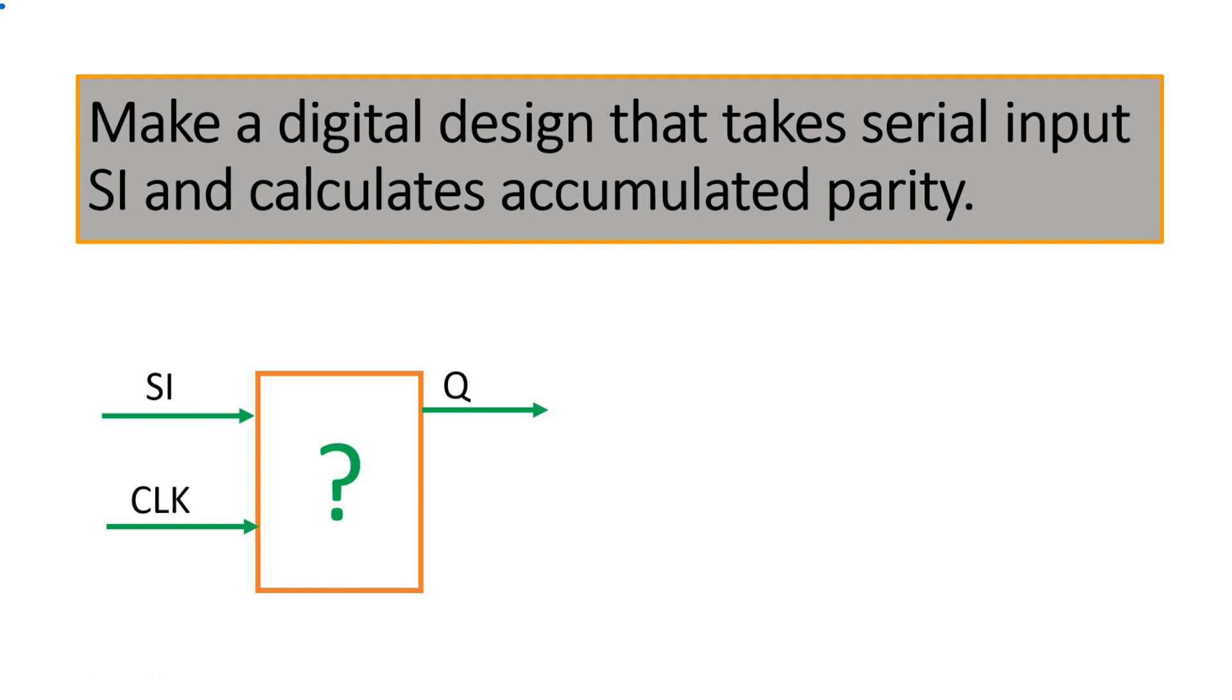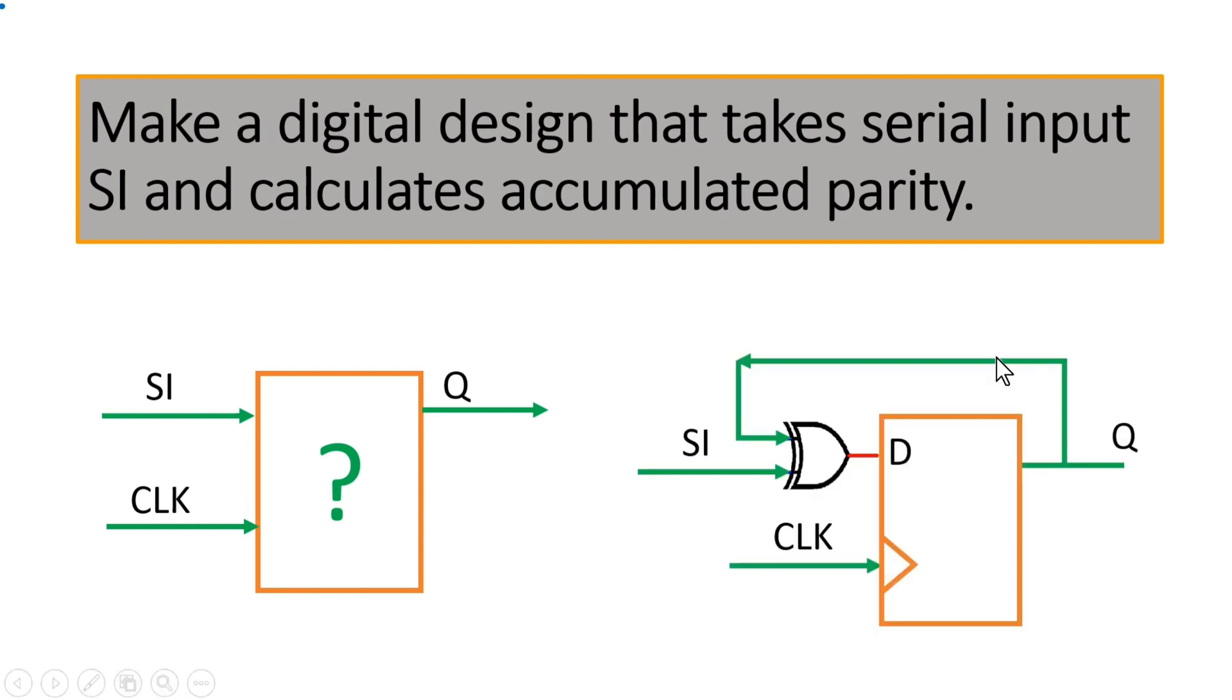Now I am going to tell you the answer. The logic circuit diagram shown here calculates the accumulated parity on input signal SI. Signal Q is the accumulated parity which is XORed with the signal SI, and it becomes the new accumulated parity which will be transferred to Q only on the positive edge of the clock.